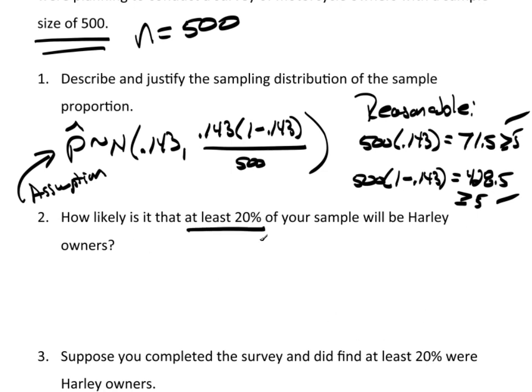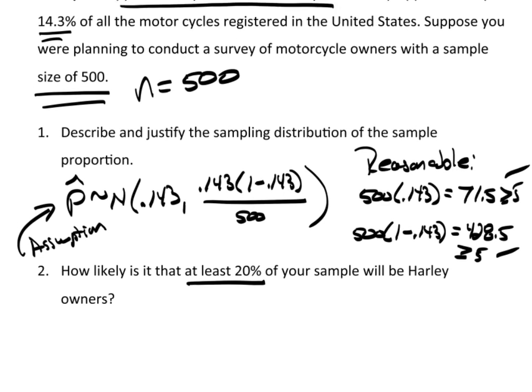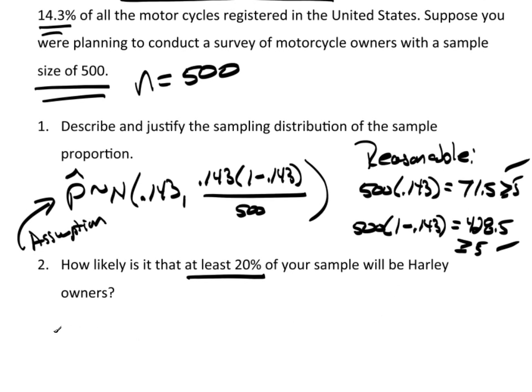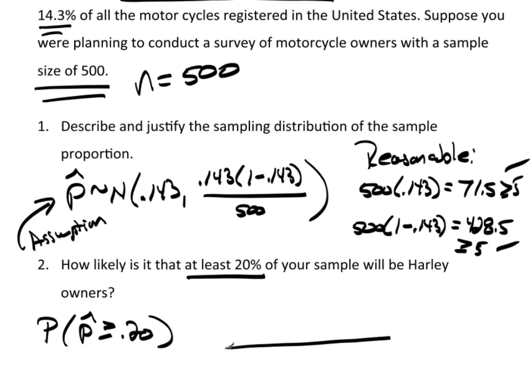How likely is it that at least 20% of your sample will be Harley owners? This is asking us to find the probability that p̂ is at least 0.20. If we draw a picture, we know the mean is 0.143, and 0.20 is up here somewhere — we need that upper tail probability. Now I can go to TC stats and actually calculate it.